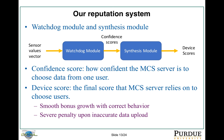Our reputation system consists of two modules. The first one is the watchdog module. The second one is the sensor size module. The watchdog module takes as input a vector of sensor values from different users and generates a confidence score. The sensor size module then generates the device score. Confidence score means how confident the mobile crowdsourcing server is to choose data from that user. The device score is the final score that the server will rely on to choose users. The reason we did not just use the confidence score is because the sensor size module will provide two properties: smooth boundless growth with correct behavior, and severe penalty upon inaccurate data upload.